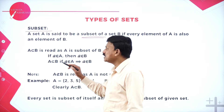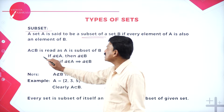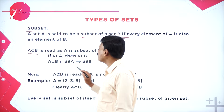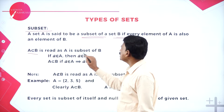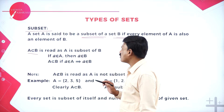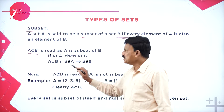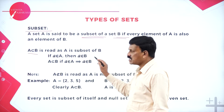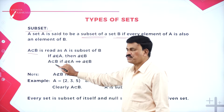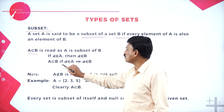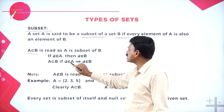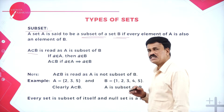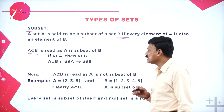How do we denote a subset? A is the subset of B — read it as 'A is the subset of B.' If an element belongs to A, then it also belongs to B. So, if A is a subset of B, it implies every element of A belongs to B.